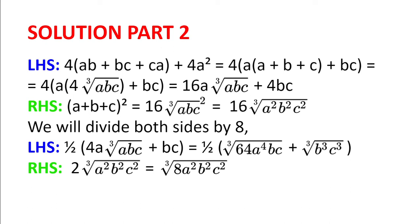Then on the right-hand side we can rewrite as 2 multiplied by the cubic root of A squared B squared C squared. Remember we have divided by 8, and we put the 2 inside the root to get the cubic root of 8 multiplied by A squared multiplied by B squared multiplied by C squared.